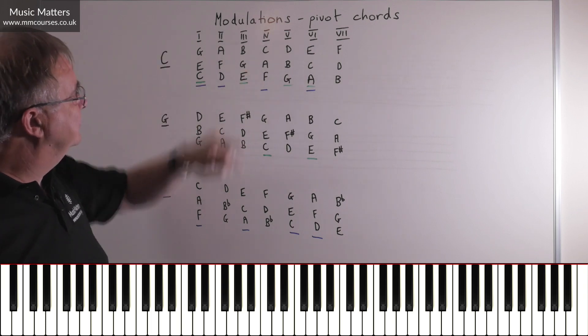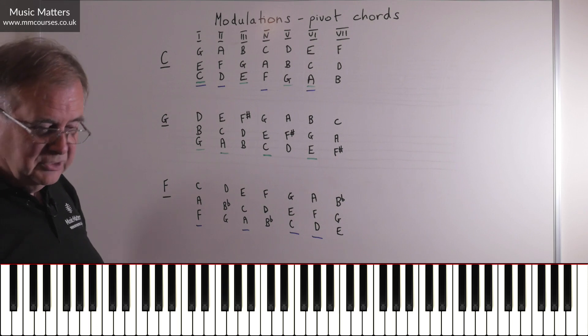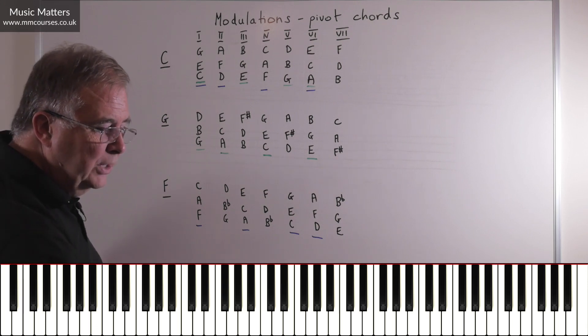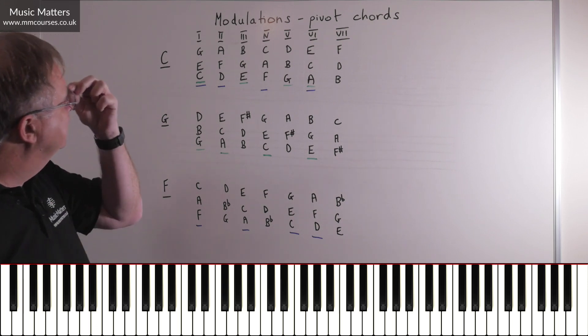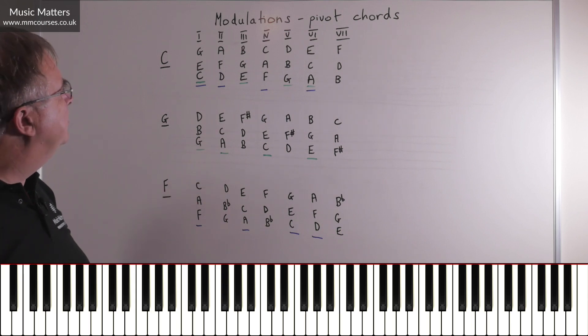They're not the same pivot chords that would take us from C major to G major. So whenever you're moving from one key to another, you've just got to work out the possibilities for pivot chords, and again, decide which might be the strong moves or the slightly weaker moves.